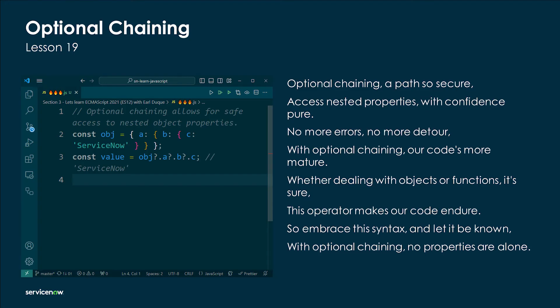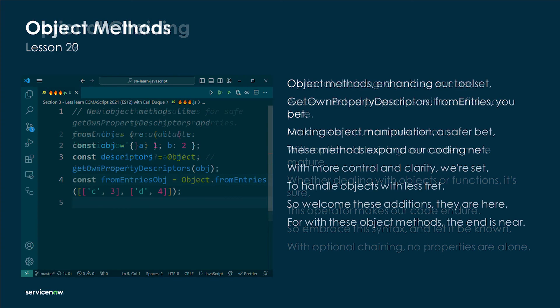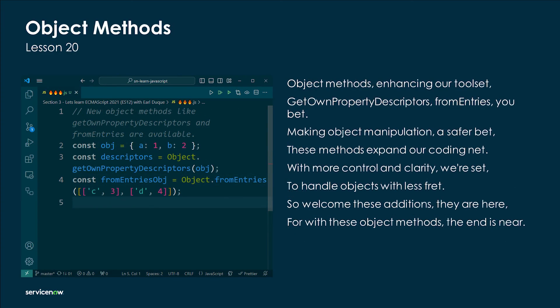Optional chaining — a path so secure, access nested properties with confidence pure. No more errors, no more detour; with optional chaining our code's more mature. Whether dealing with objects or functions deep, this operator makes our code complete. So embrace this syntax and let it be known — with optional chaining, no properties are alone.